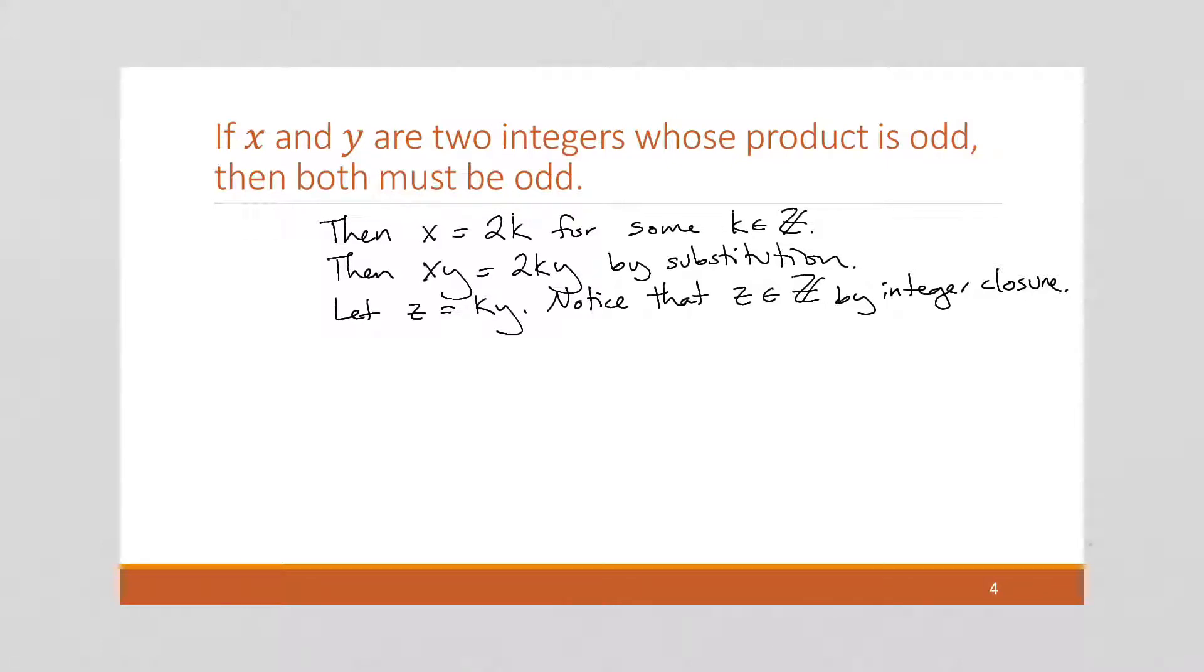Well, then what is xy equal again? Well, it's 2 times z. xy is 2 times k times y, and k times y is z. So I get that xy is equal to 2z, where z is an integer. Well, that's even. By the definition of even.